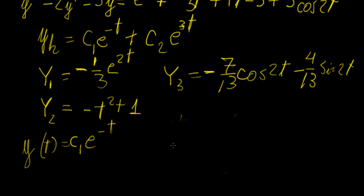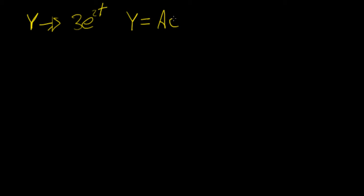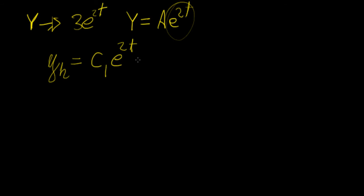Before moving on, I want to make a final remark about what type of Y functions we can choose. For an exponential, say 3e^(2t), we choose capital Y = a·e^(2t), replacing the constant with an undetermined coefficient. The problem arises if this function happens to equal one of the solutions in the homogeneous case — for example, if the homogeneous solution contains e^(2t) — because then we cannot use the same function.